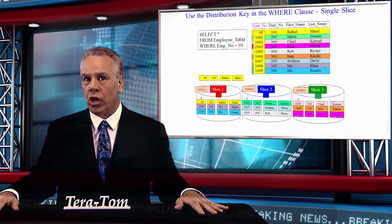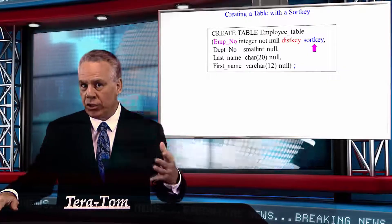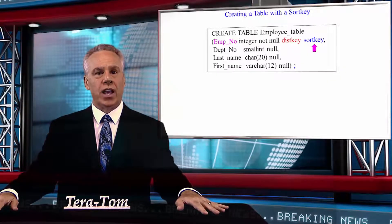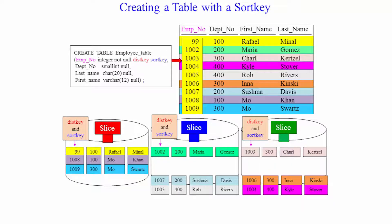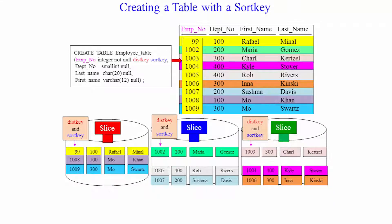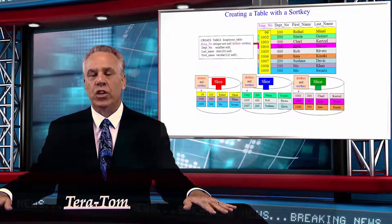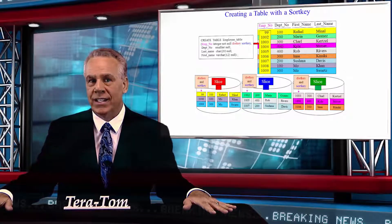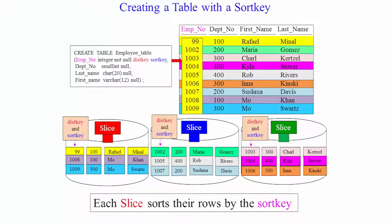You can also provide a sort key. In this case, you're going to see EMPNO as the distribution key, but you're also saying I want you to sort by that too. So each slice gets their rows and then sorts by that employee number as well. It's a very important concept to understand how a distribution key uses the math to spread the data and then go and find that data.